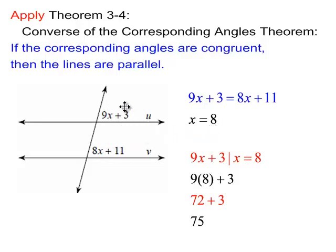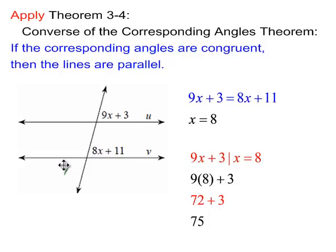If you want to know the measure of either of those angles, substitute 8 in for x into either expression. I put 8 into the left expression: 9 times 8 plus 3 gives 75. So the measure of this angle is 75 degrees. By vertical angles, that's also 75 and 75. Then the same-side interior angles must be supplementary, so those are 105.